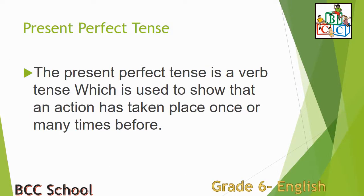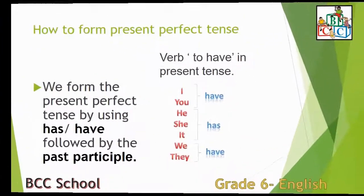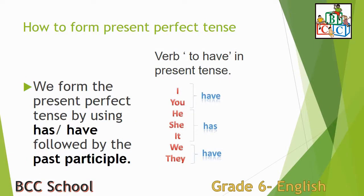The Present Perfect Tense is a verb tense which is used to show that an action has taken place once or many times before. We form the Present Perfect Tense by using 'has' or 'have' followed by the past participle.